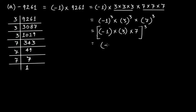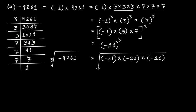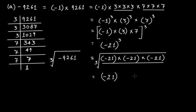Multiplying minus 1 by 3 by 7 gives minus 21, raised to the power of 3. This means minus 21 multiplied by minus 21 multiplied by minus 21. So minus 9261 can be written as minus 21 cubed. Therefore, if you find the cube root of minus 9261, you get minus 21. That is the cube root of minus 9261.